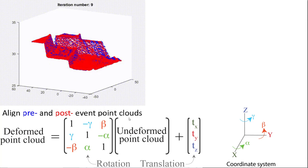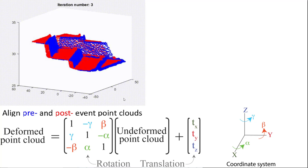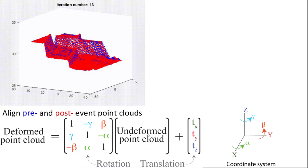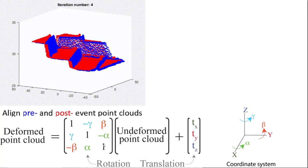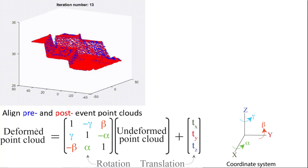The alignment is done with a rigid deformation, which includes a rotation and a translation. For example, we take the undeformed point cloud, apply a rotation, and then a translation, and this generates the deformed point cloud.